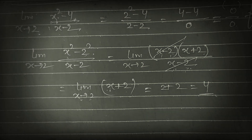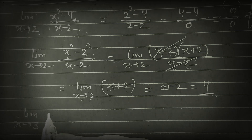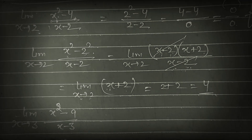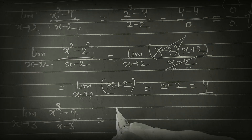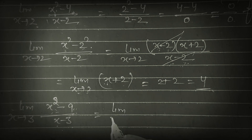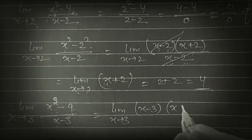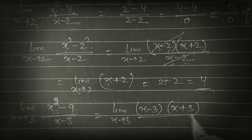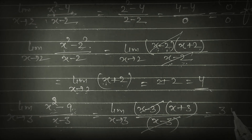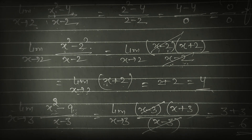This method is called the factorization method. One more example: limit x tends to 3 of (x² − 9) upon (x − 3). It is 0/0 form. We factorize: x² − 9 = (x − 3)(x + 3). Cancel (x − 3). Then it is 3 + 3 = 6. Answer is 6.